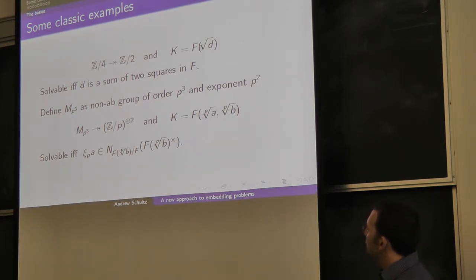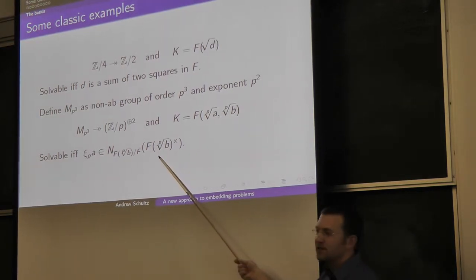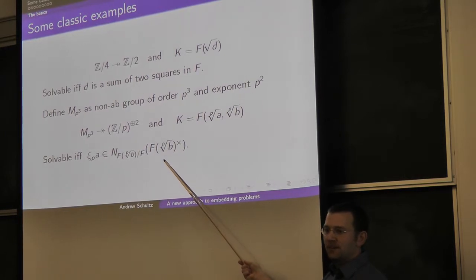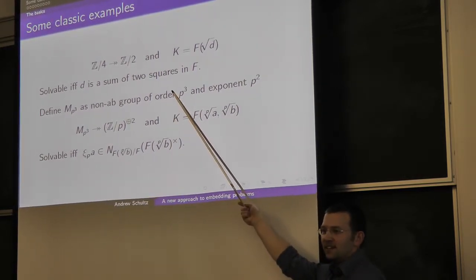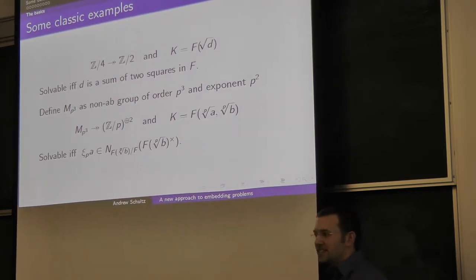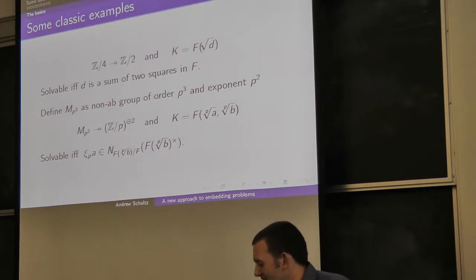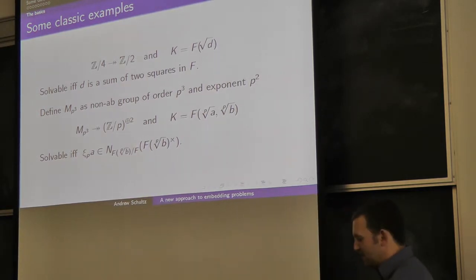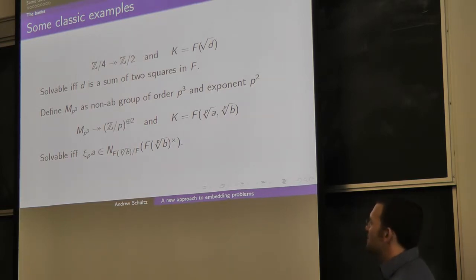If you're an algebraist studying fields, these are actually pretty nice results. This first one says that a solution exists exactly when something is representable as the sum of two squares — that sounds like number theory. It's just basic enough that you could explain it to a non-mathematician, and when that happens, I feel pretty good about life.